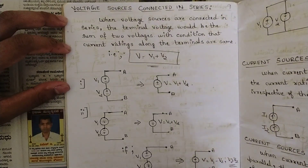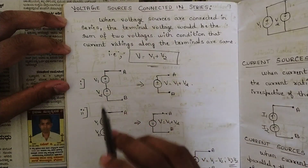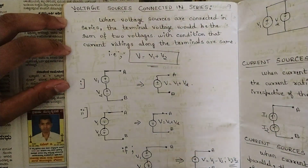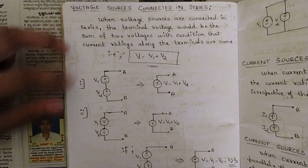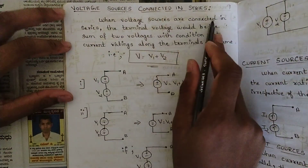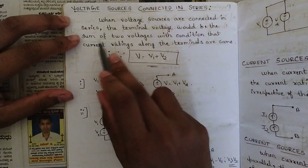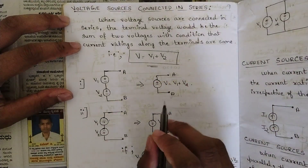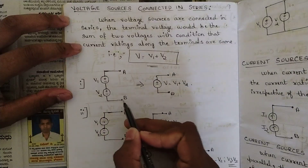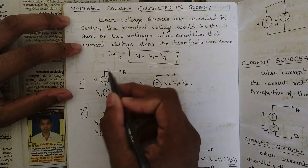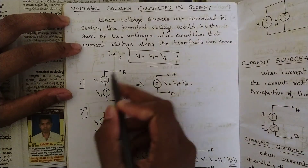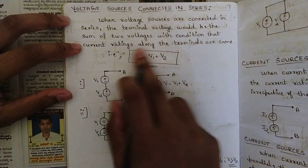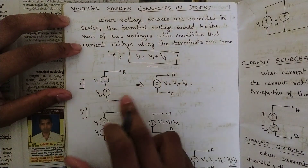From the next session we are going to solve problems. Our first concept in this session is related to voltage sources connected in series — what would be the reaction of the circuit whenever two voltage sources are in series. When voltage sources are connected in series, the terminal voltage would be the sum of the two voltages, with the condition that current ratings along the terminals are the same.